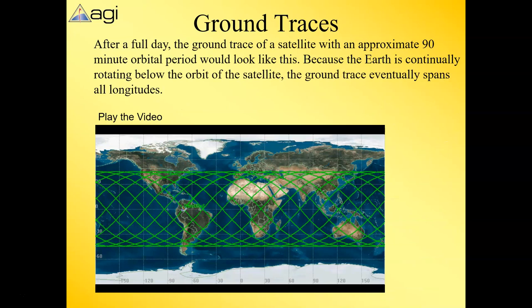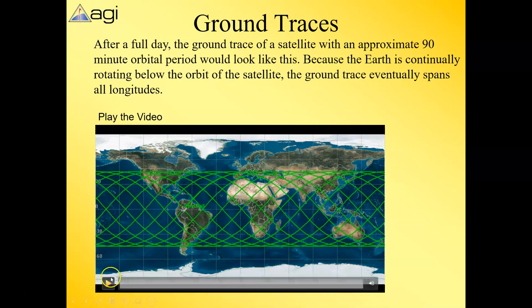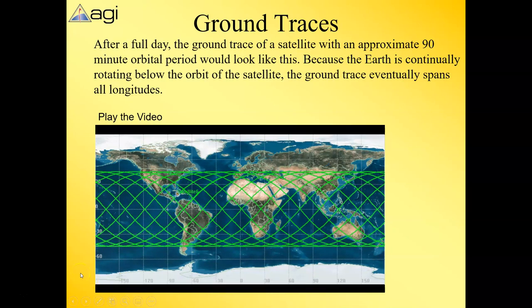Here's what it would look like after a full day. This satellite has about a 90-minute orbital period. We'll play this video to show what the ground traces for a whole day look like. It kind of looks like a weave, and you can notice this satellite goes from roughly 45 degrees above the equator to minus 45 degrees below.